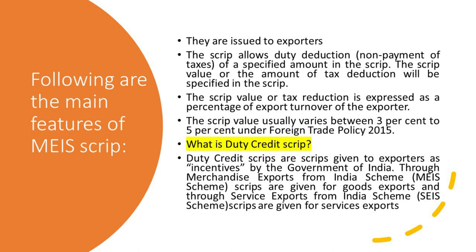What is a duty credit script? Duty credit scripts are scripts given to exporters as incentives by the government of India through the Merchandise Exports from India Scheme (MEIS). The scripts are given for goods exports and also through service exports from India. So service exporters are also eligible for incentives — that is called the SEIS Scheme.